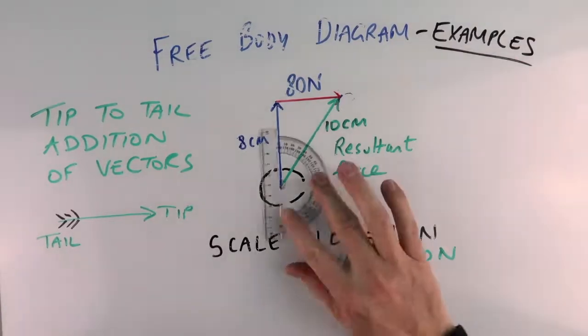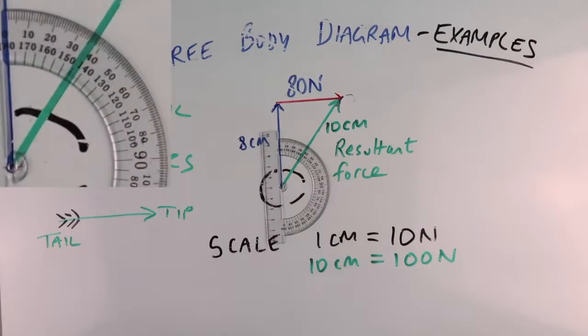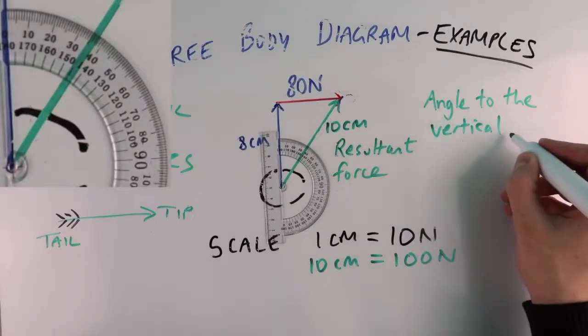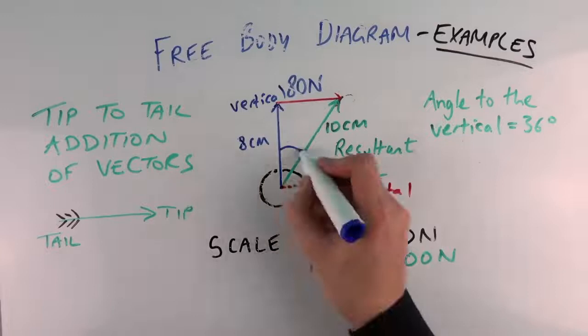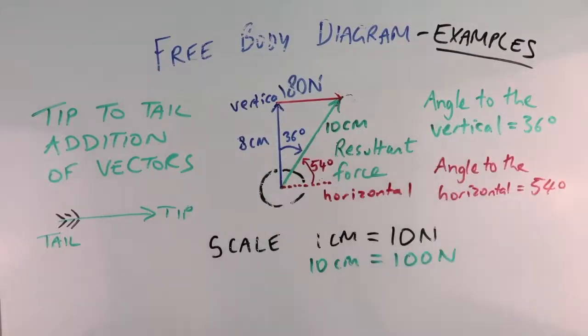To find the direction, we use our protractor. You can quote the direction as an angle against the vertical. In this example, that would be 36 degrees. Or you can quote the angle against the horizontal. In this example, that would be 54 degrees.